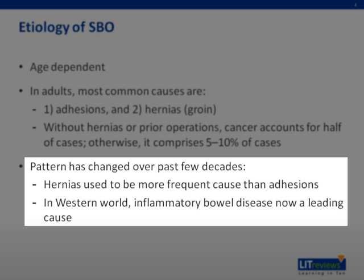Remember, it's still poor form to diagnose an obvious groin hernia in a patient with suspected small bowel obstruction on a CT scan rather than on physical exam. Keep in mind that protrusion of a hernia in the setting of abdominal distension from bowel obstruction does not necessarily signify that hernia as the underlying cause. With a declining trend in hernias as etiology, inflammatory bowel disease is now a leading cause in the Western world.